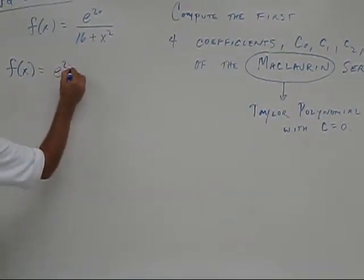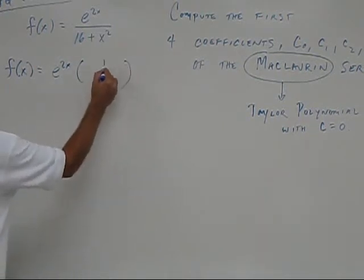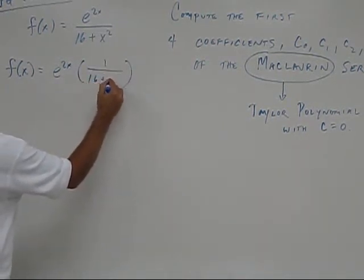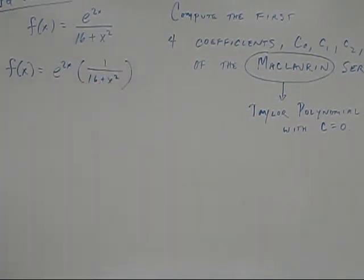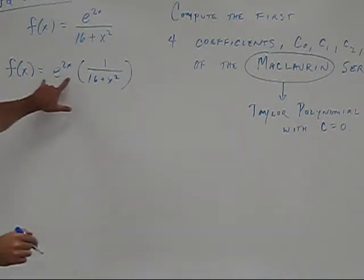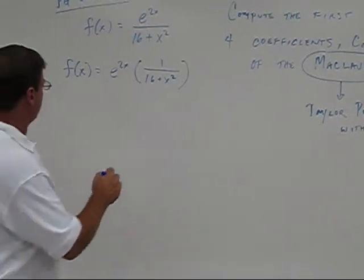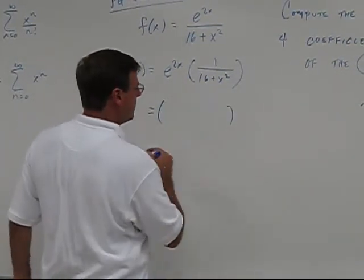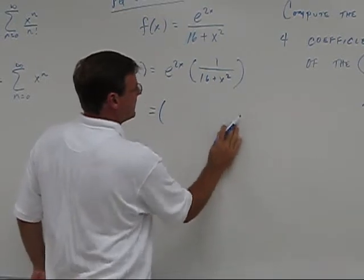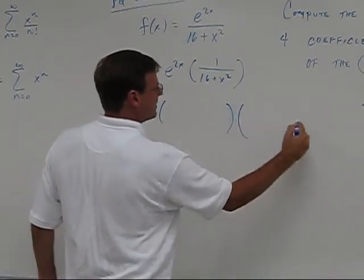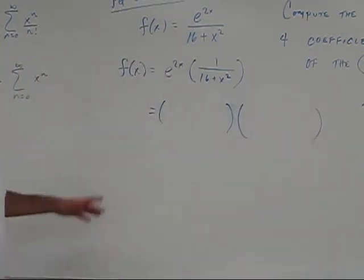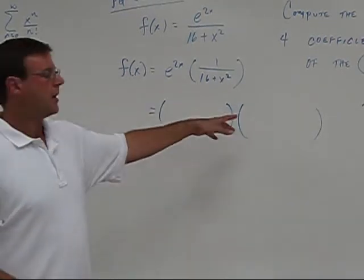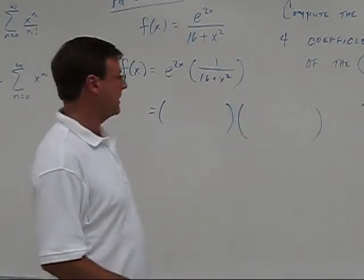So maybe we'll look for another solution. So what I'm going to first do is rewrite f of x as the product of these two functions. And then I'm going to write the expansion for this and the expansion for this. And then I'm going to multiply and I'll just find out what the first four terms are.